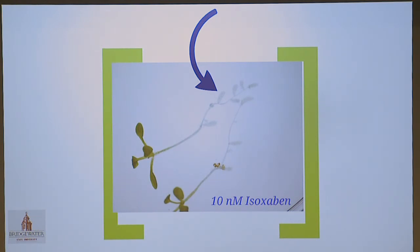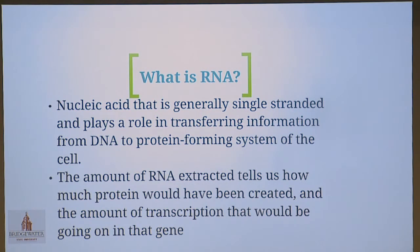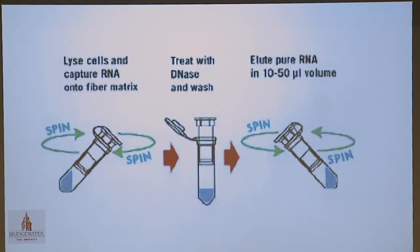I let these plants grow for a week in the treated and infected media and then performed an RNA extraction. For those who don't know, RNA is a nucleic acid that is generally single-stranded and serves as the intermediate between DNA and protein synthesis — like a messenger. The amount of RNA I extract from the plants lets me know how much protein has been produced. I lyse the cells and break them down, go through a series of washes, columns, and buffers, make sure there's no DNA in the solution, and extract the pure RNA.